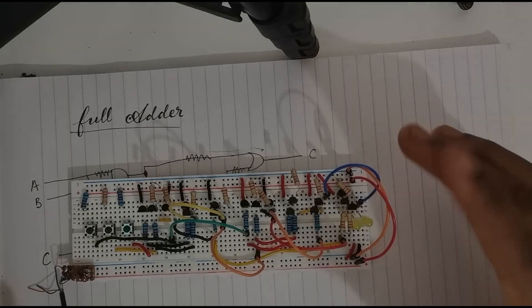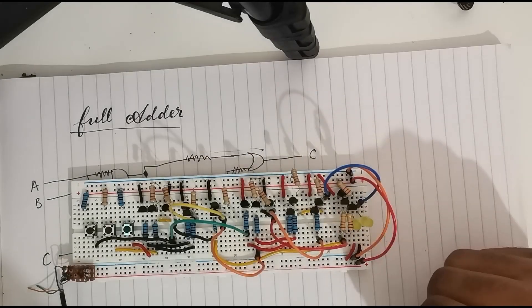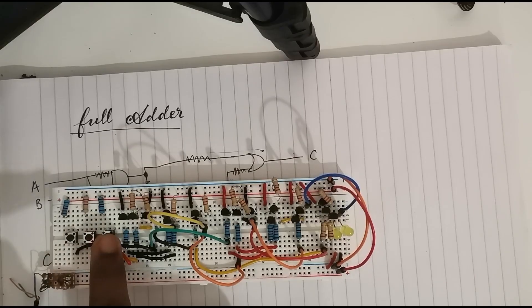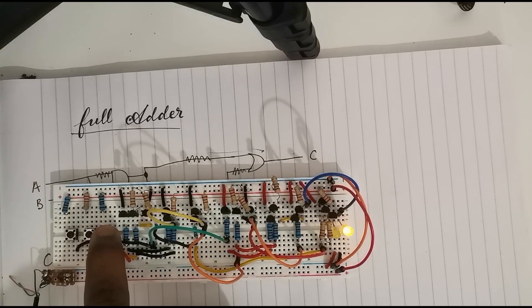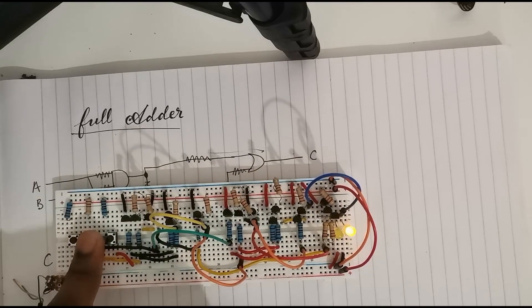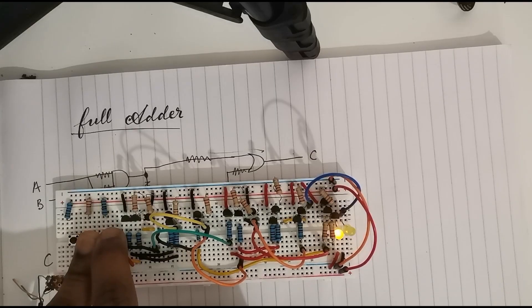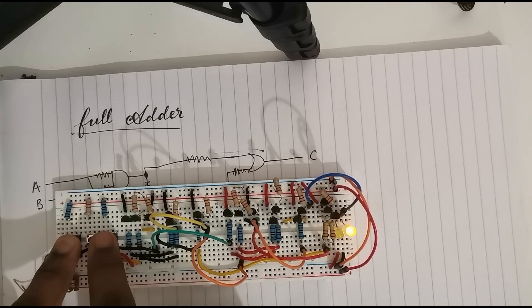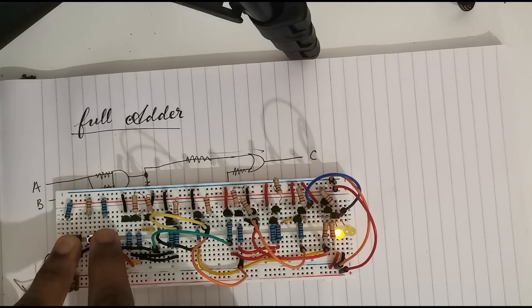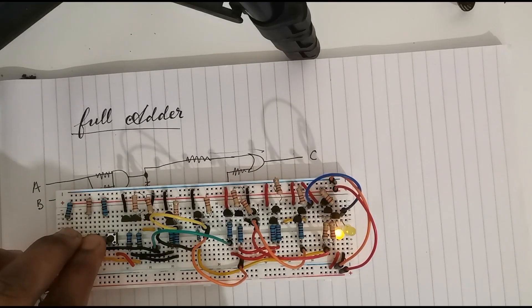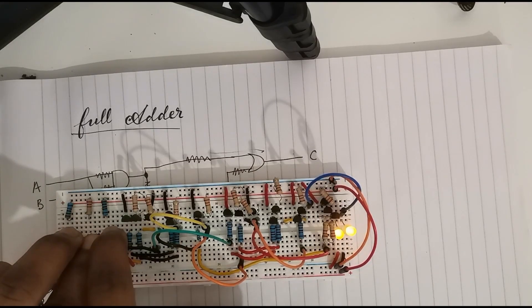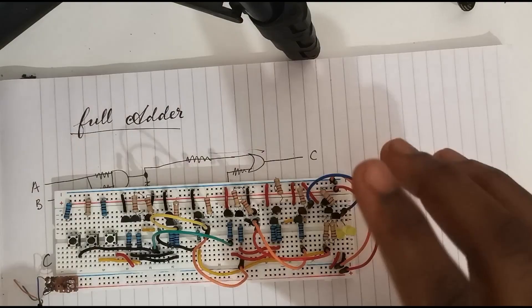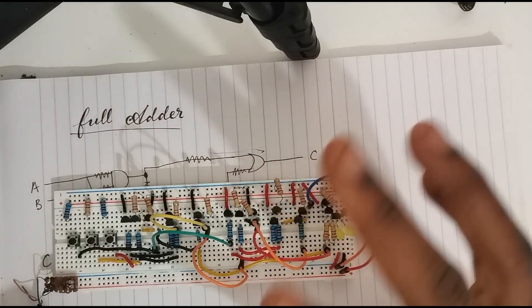And this is the completed circuit. And these are the outputs. If we have 0 plus 0 plus 1, then we have a 1 on the output. 0 plus 1 plus 0 is 1. 0 plus 1 plus 1 is 2. 1 plus 0 plus 0 is 1. 1 plus 0 plus 1 is 2. 1 plus 1 plus 0 is 2. And 1 plus 1 plus 1 is 3. And this works perfectly. And it will work perfectly every time.